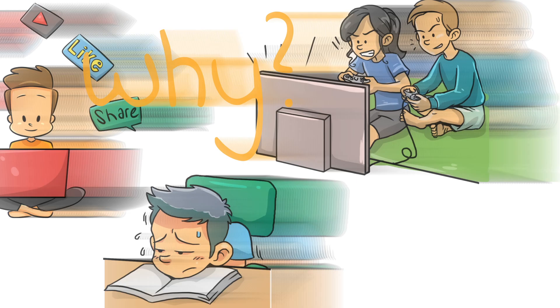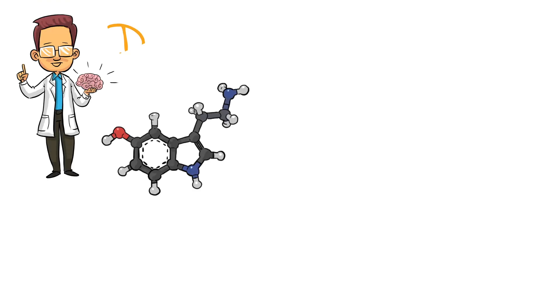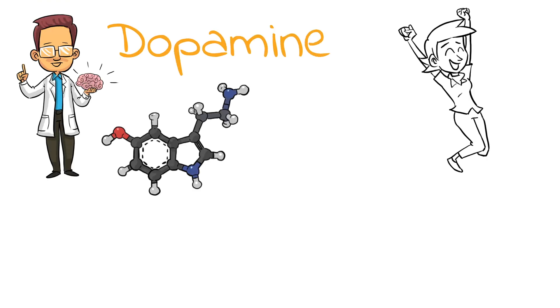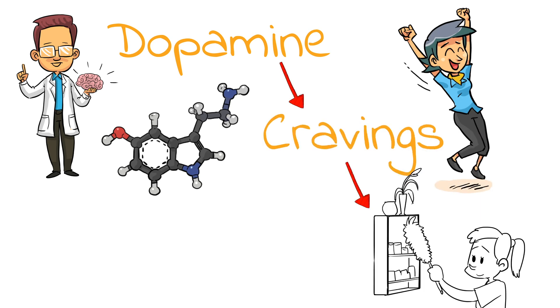Why does this happen? The answer lies in our brain, specifically a neurotransmitter called dopamine. Dopamine is commonly mistaken for a happiness molecule, but its actual role is in driving our cravings and motivating us to take action.